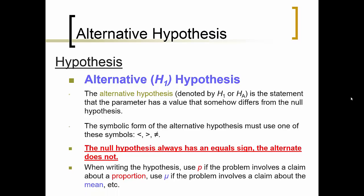When writing the hypothesis, use P if the problem involves a claim about a proportion. Use mu if the problem involves a claim about the mean.